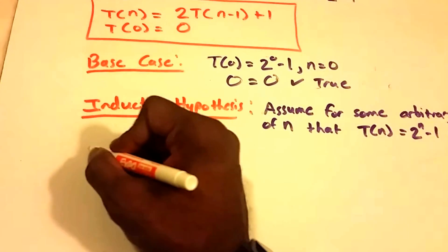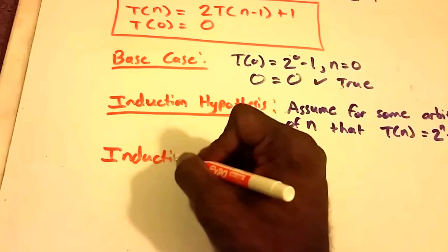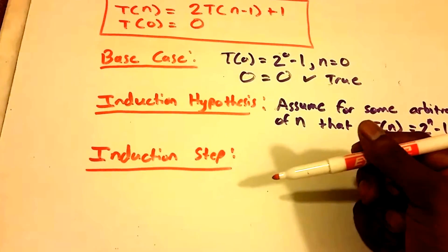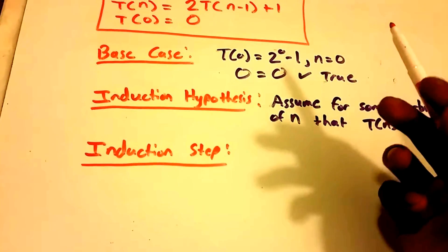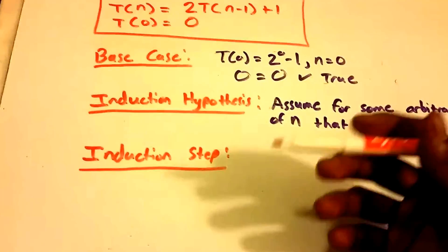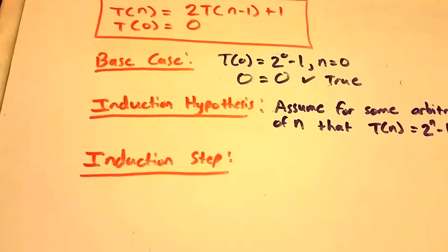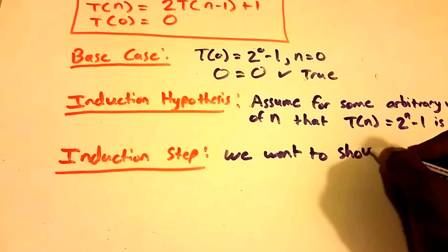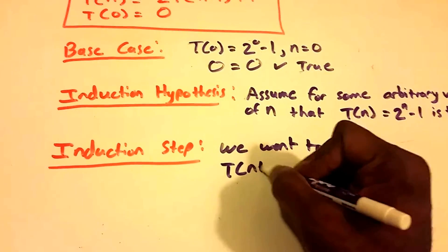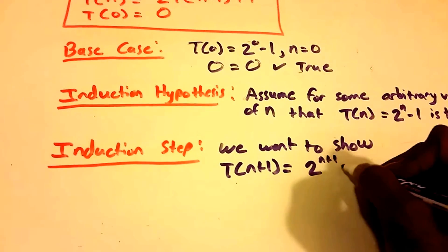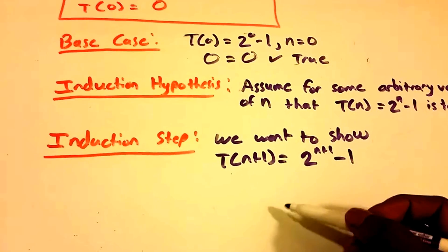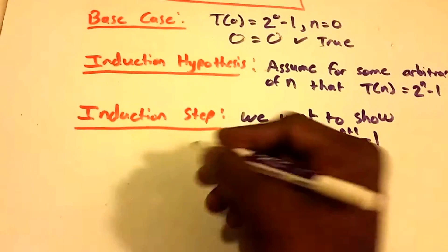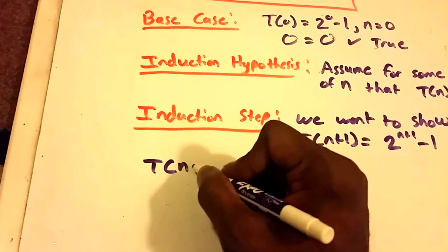Now for the inductive step: we need to prove that if the statement is true for any one natural number, it must be true for the next natural number as well. Specifically, we want to show that T(n+1) equals 2^(n+1) minus 1. We start with the left-hand side: T(n+1).